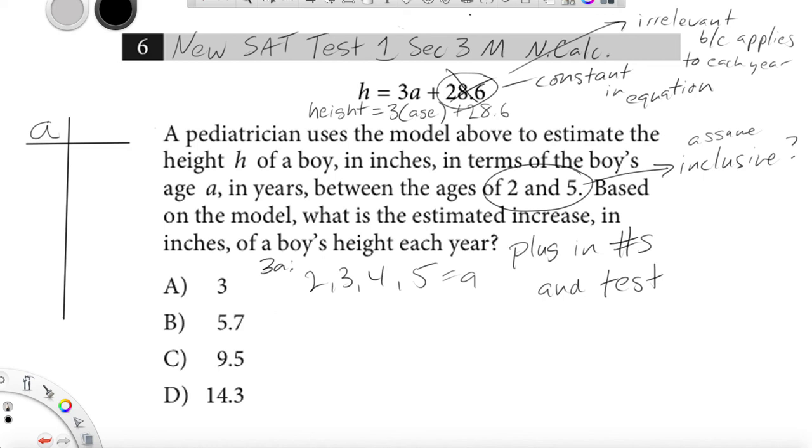A. And then basically 3A. So A could be 2, 3, 4, or 5. At least that's what we're figuring. And then so what would 3A be? Okay. Well, we just multiply it by 3. 2 times 3 is 6. 3 times 3 is 9. 4 times 3 is 12. 5 times 3 is 15.